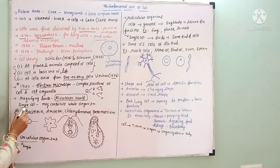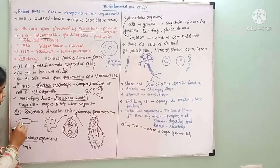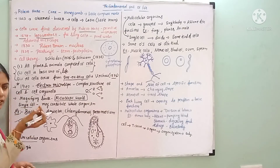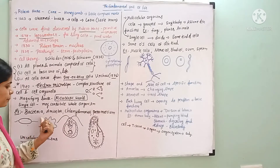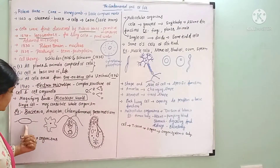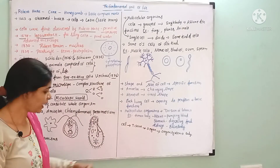Single-cell organisms are called unicellular organisms. 'Uni' means single, so the total organism is a single cell. Examples of unicellular organisms include bacteria, amoeba, chlamydomonas, and paramecium.